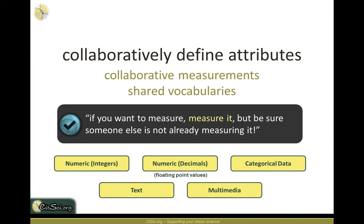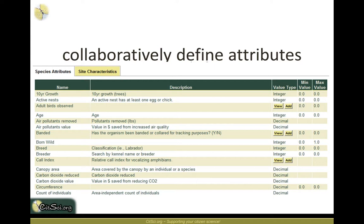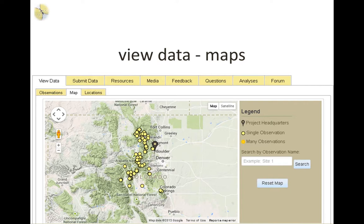You can collaboratively define attributes across projects — a classroom in Montana might want to share a measurement of diameter at breast height with a project in Arizona. This is how that growing list of measurements works: they can be species measurements about an organism or site characteristics about a location. For those who have been conducting citizen science for a long time, you can add an Excel or comma-separated or tab-delimited text file to upload historical data in bulk.